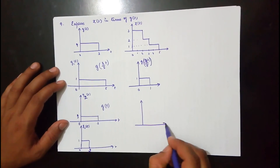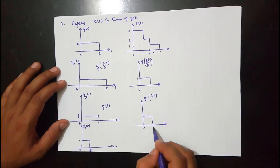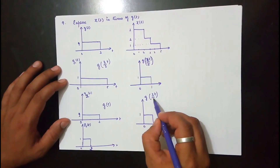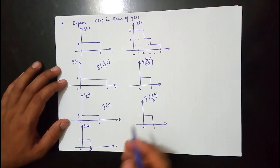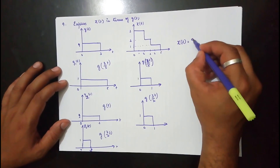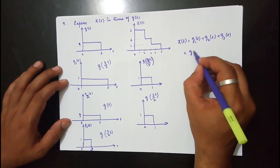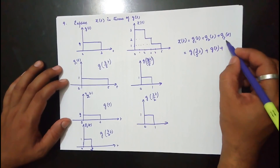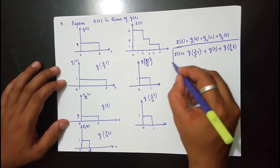Coming to the waveform which extends from 0 to 2 with an amplitude of 1 — again, compress it to 1 then expand. If I want to compress it to 1, I will do g(3t), which means it extends between 0 to 1 with an amplitude of 1. Now if I want it to extend between 0 to 2, I divide by 2 so that it expands. So this waveform is g(3/2 · t). Finally, x(t) is nothing but the addition of g1(t), g2(t), and g3(t), where g1(t) = g(3/5 · t), g2(t) = g(t), and g3(t) = g(3/2 · t). This is x(t) expressed in terms of g(t).